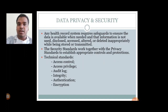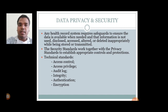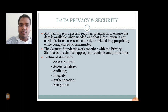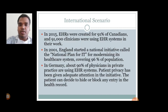Data privacy and security: any health record system requires safeguards to ensure the data is available when needed and that information is used, disclosed, accessed, and handled appropriately when stored or transmitted. The security standards work together with privacy standards to establish appropriate controls and protection. Technical standards such as access control, access privilege, audit log, integrity, authentication, and encryption are employed.